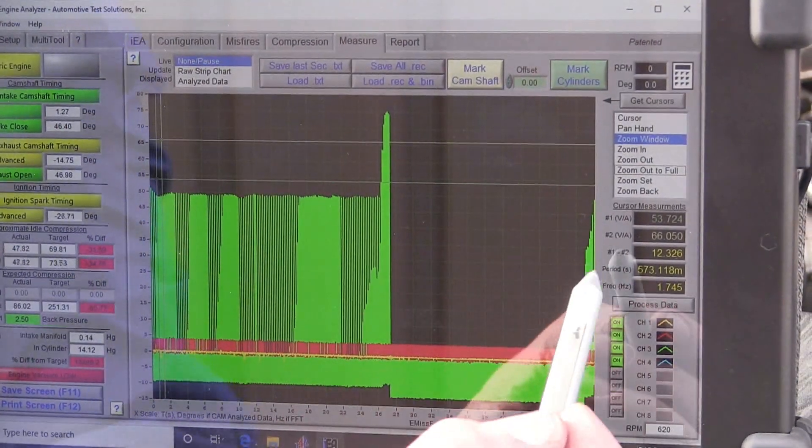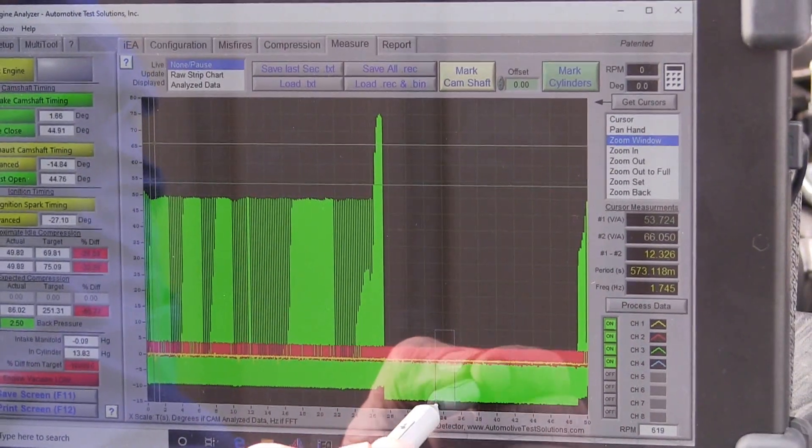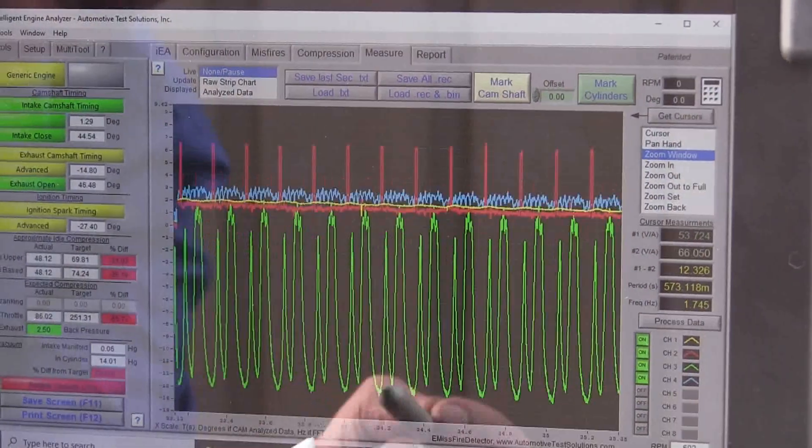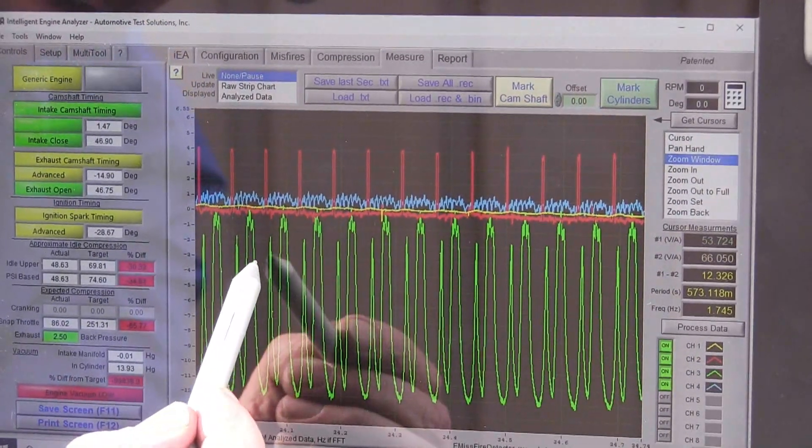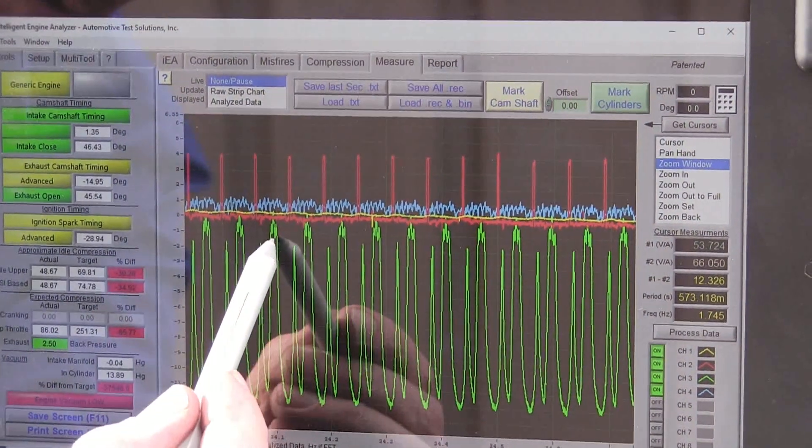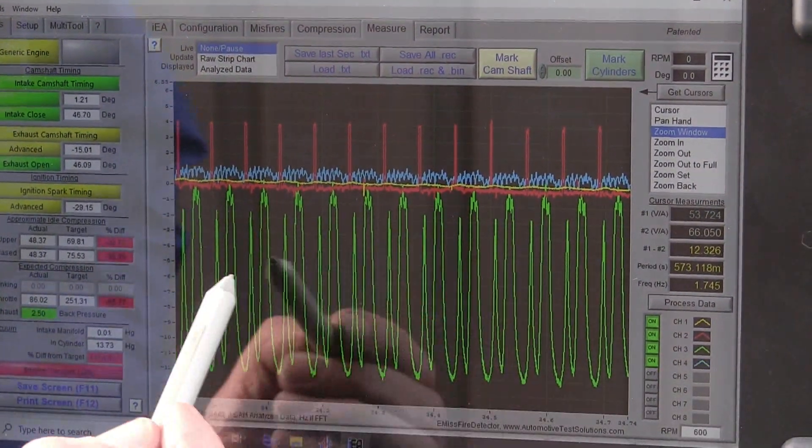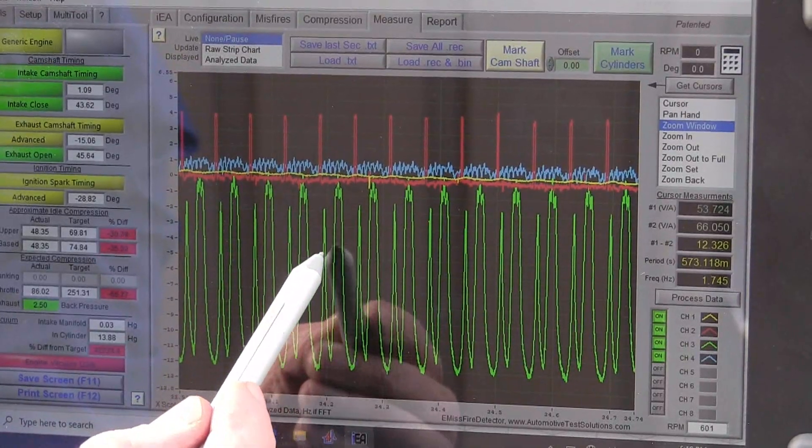So what I want to do is I want to come in and I want to blow this up. Notice what we can clearly see is that the compression pulse is lower than the exhaust. The wider one right up through here is the exhaust. These lower ones are the compression.